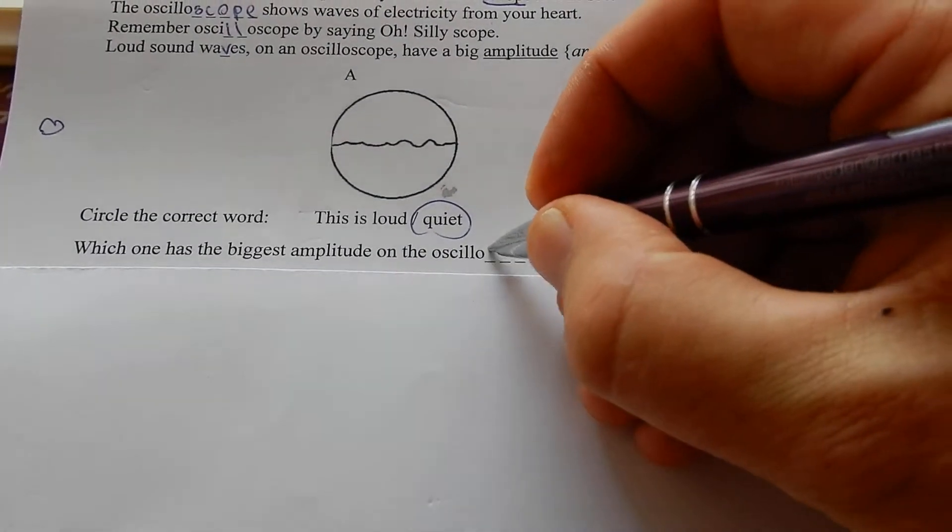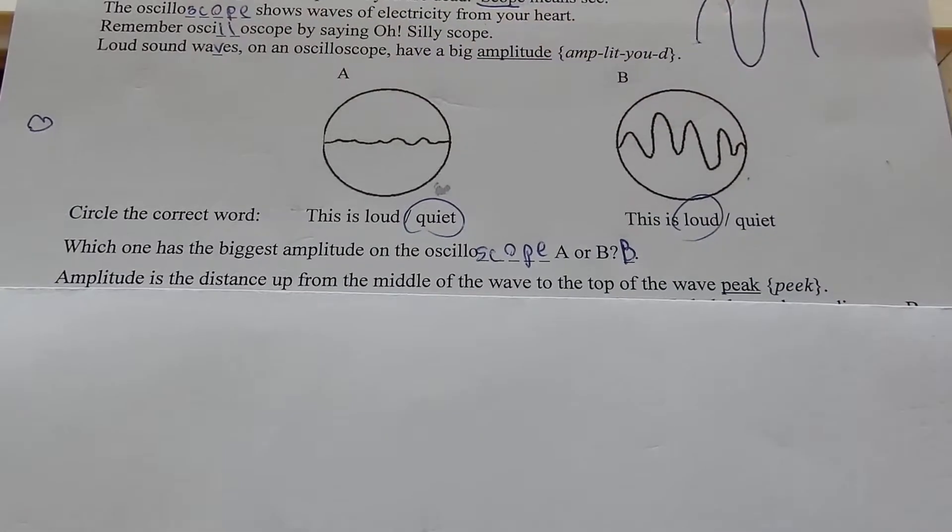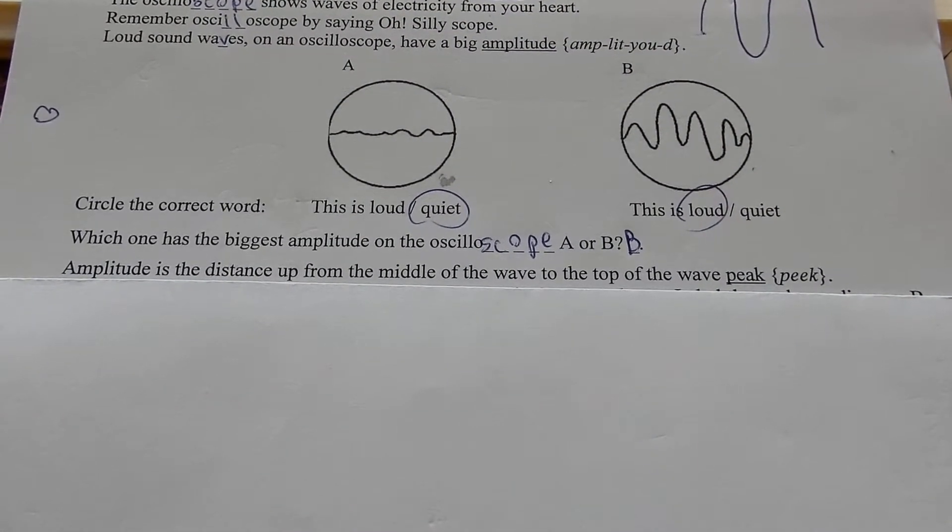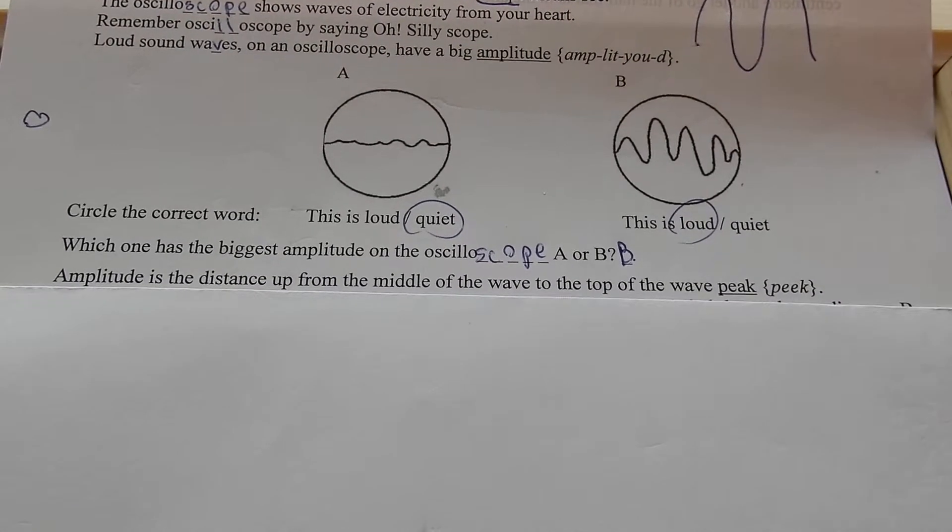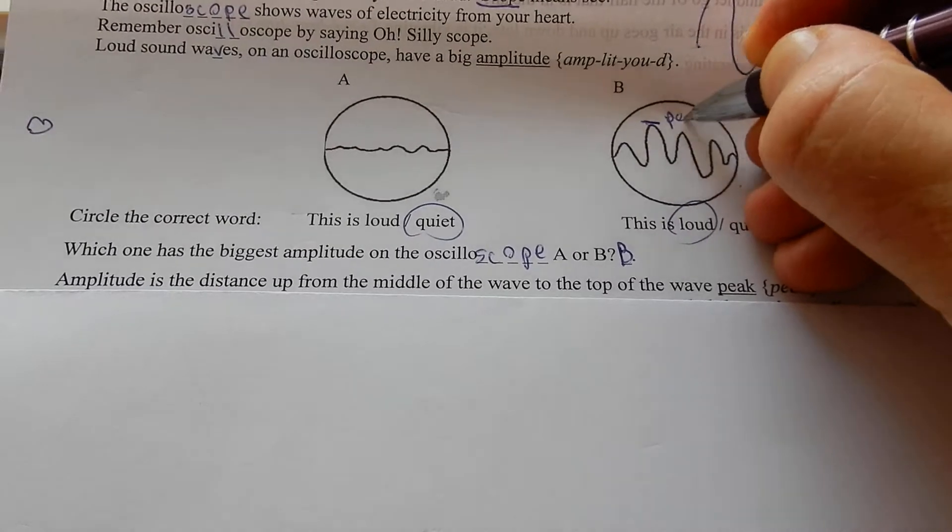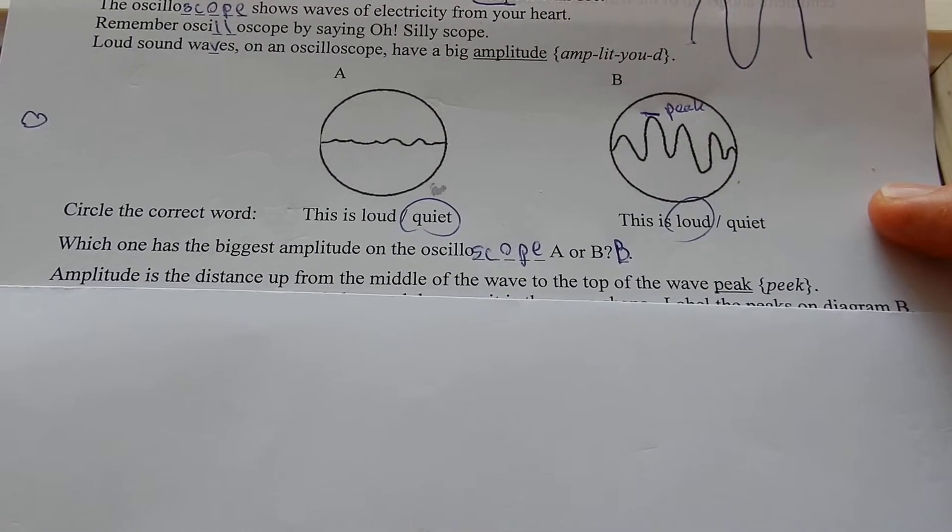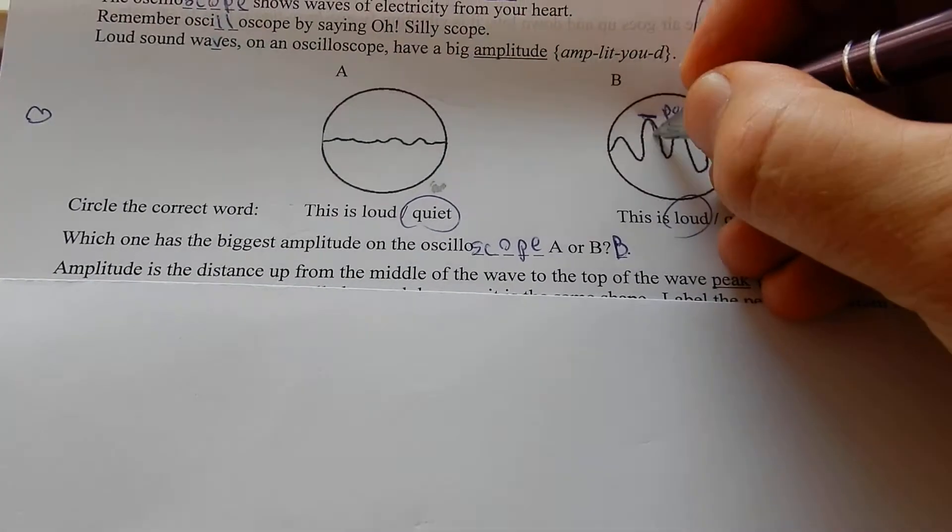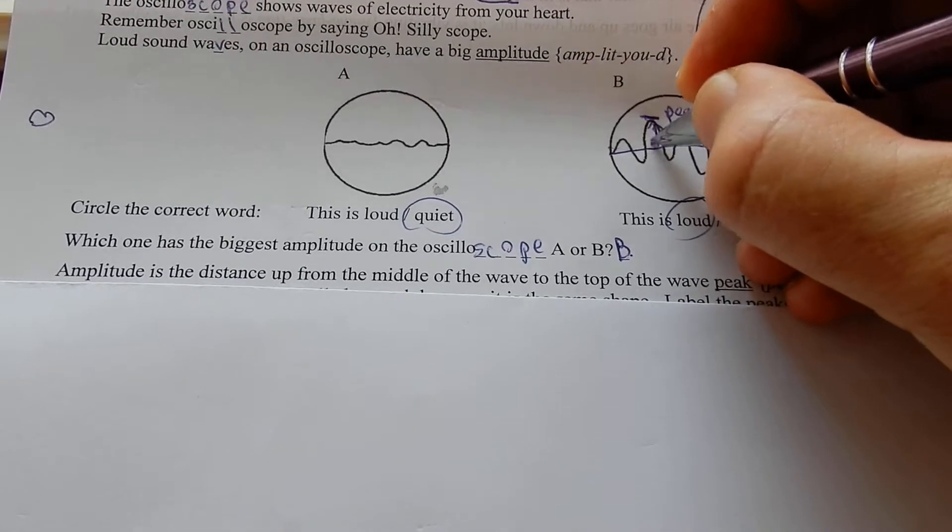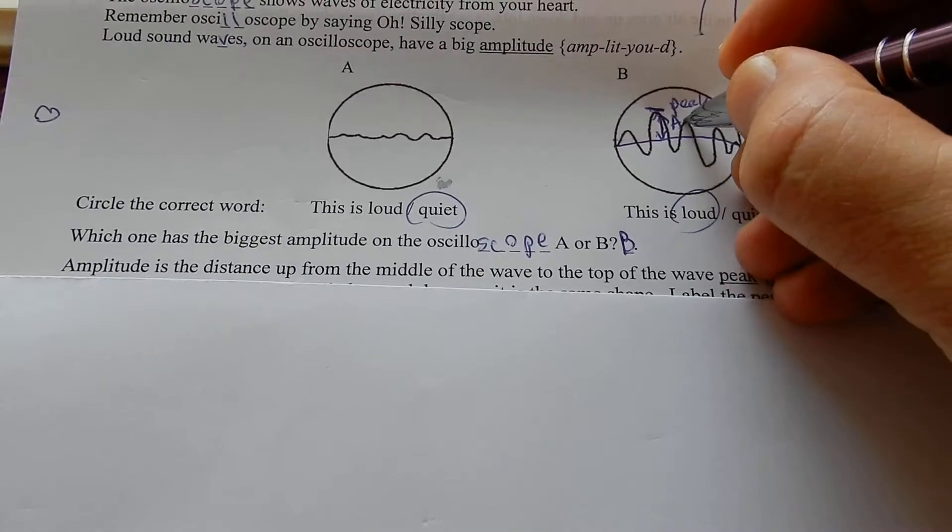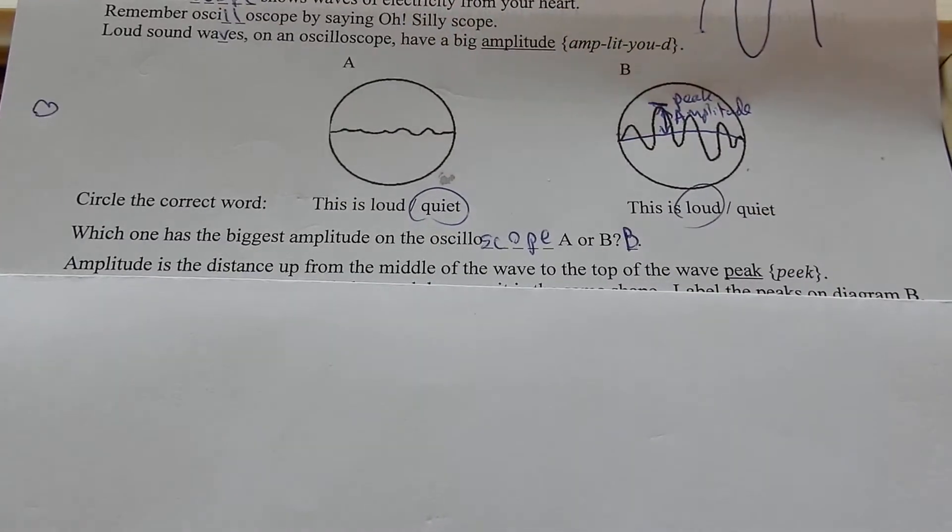Amplitude is the distance up from the middle of the wave to the top of the wave, the peak. This is the peak of the wave. Amplitude is the distance up from the middle. That distance is the amplitude. I was gonna put amp, but amps is electricity. Amplitude.